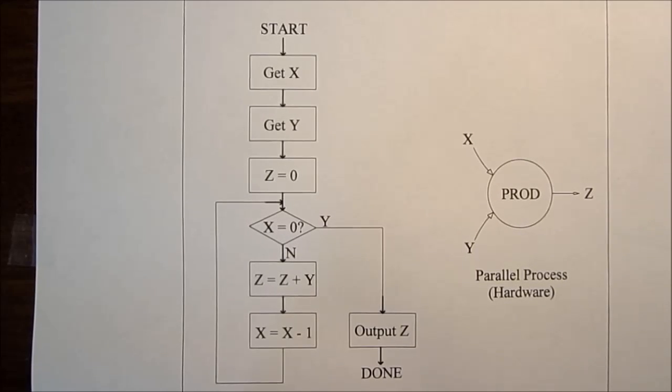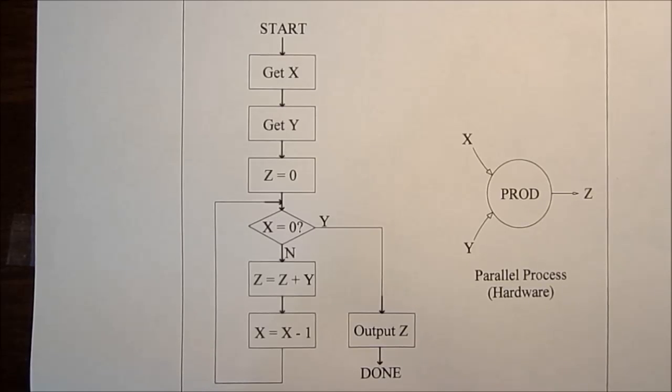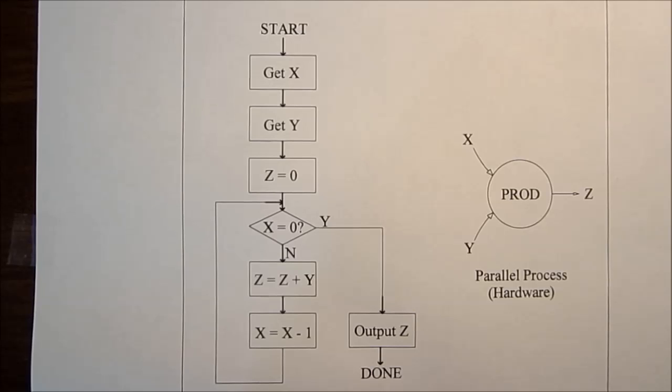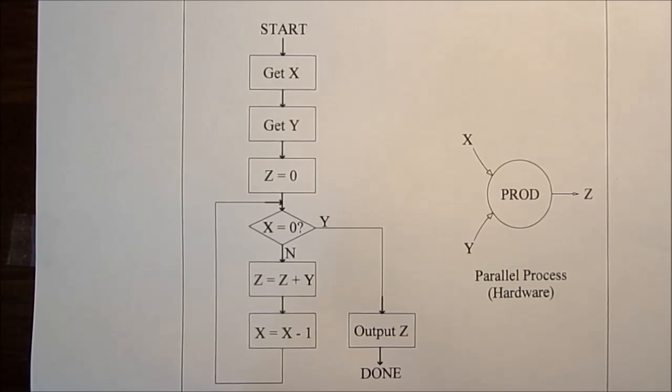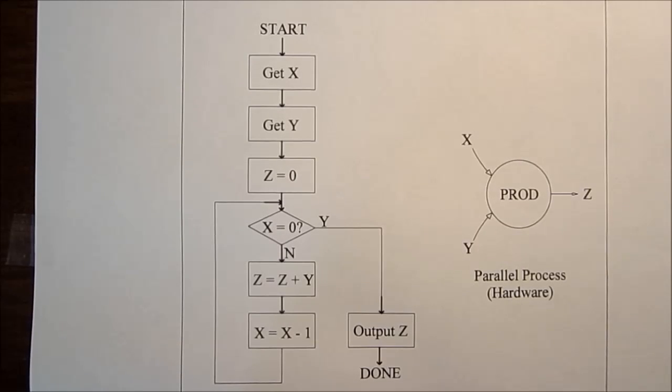Most computer systems process information in a sequential manner. You start out with lines of code in the computer program, which gets translated into assembly language by the compiler. And then the assembly language gets decoded into microcode on the processor. But everything, every step of the way, is done sequentially, one step after another.